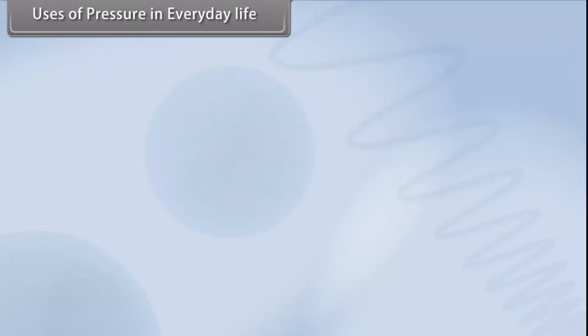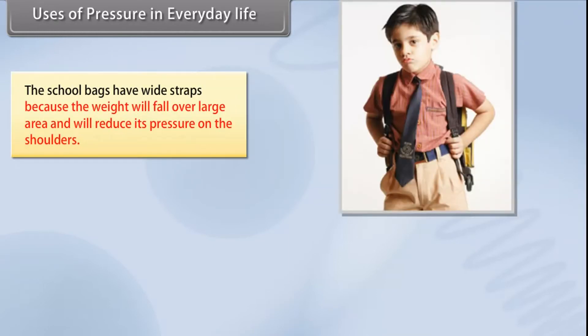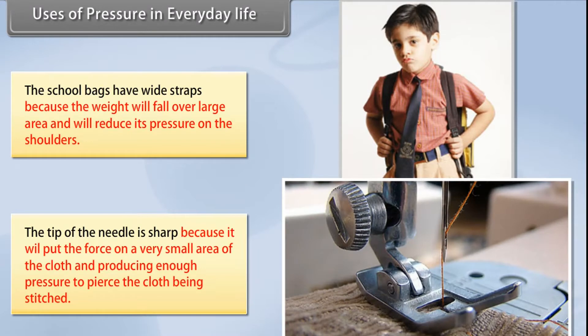Uses of pressure in everyday life. The school bags have wide straps because the weight will fall over large area and will reduce its pressure on the shoulders. The tip of the needle is sharp because it will put the force on a very small area of the cloth and producing enough pressure to pierce the cloth being stitched.